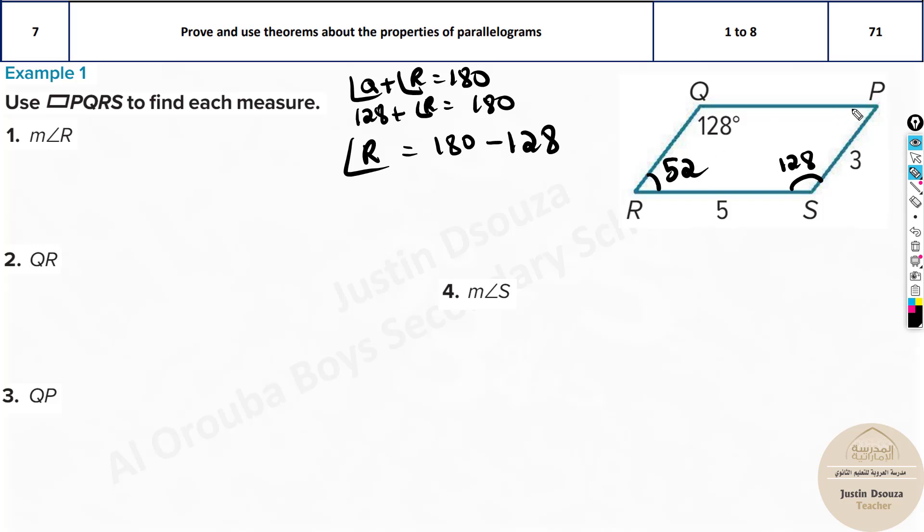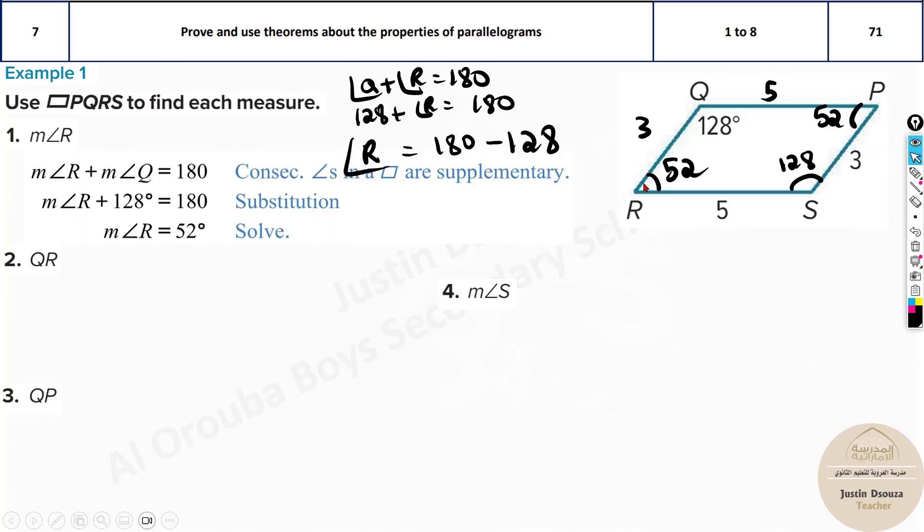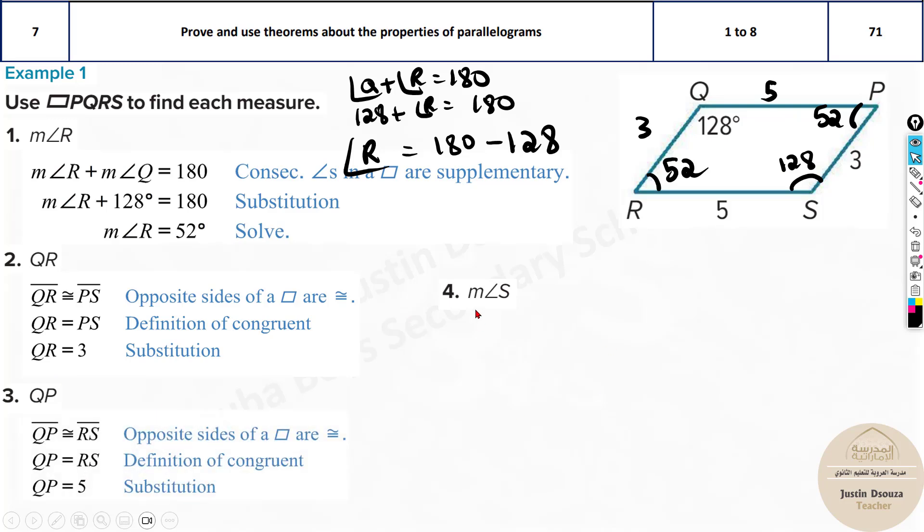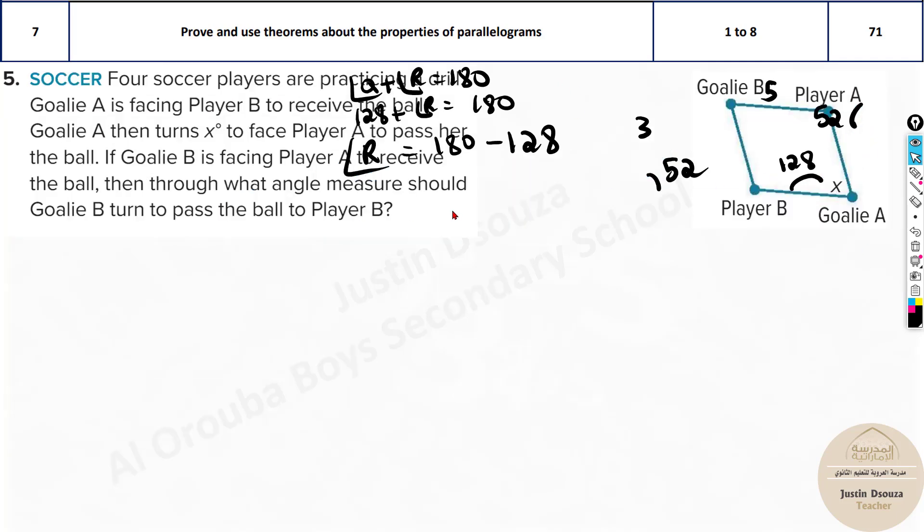Now if this is 52, then over here P is also 52. And now if this is 5, the above is 5. And if this is 3, this is also 3. So we now know all the details. Now what do you want? R is 52 degrees. Now what is QR? 3. QP is 5. And lastly, measure of angle S, 128. That's it. Parallelogram is very easy. Just look at the parallelogram, solve all these sides and whatever is required. I mean, you don't need to solve all the things, just what is required.